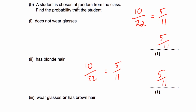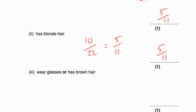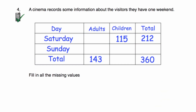The next part says: find the probability that the student either wears glasses or has brown hair. Students with glasses or brown hair: those who wear glasses (3+6+3=12) plus brown-haired students who don't wear glasses (5). That's 17 students. So it's going to be 17 out of 22.